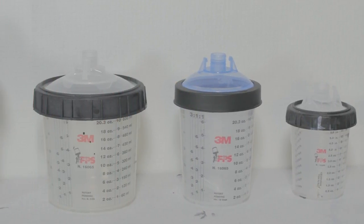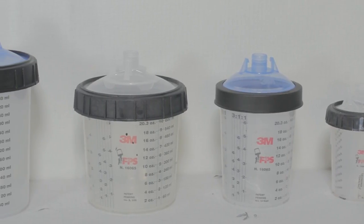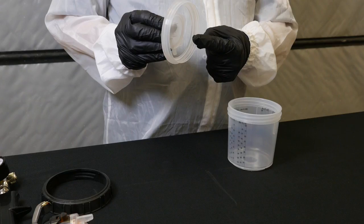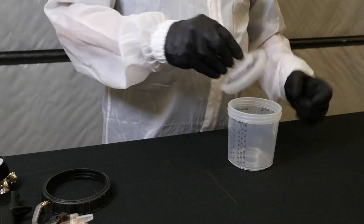Consult your paint manufacturer's product data sheet to choose the correct filter size. To attach the lid, simply take the lid and set it on top of the liner.